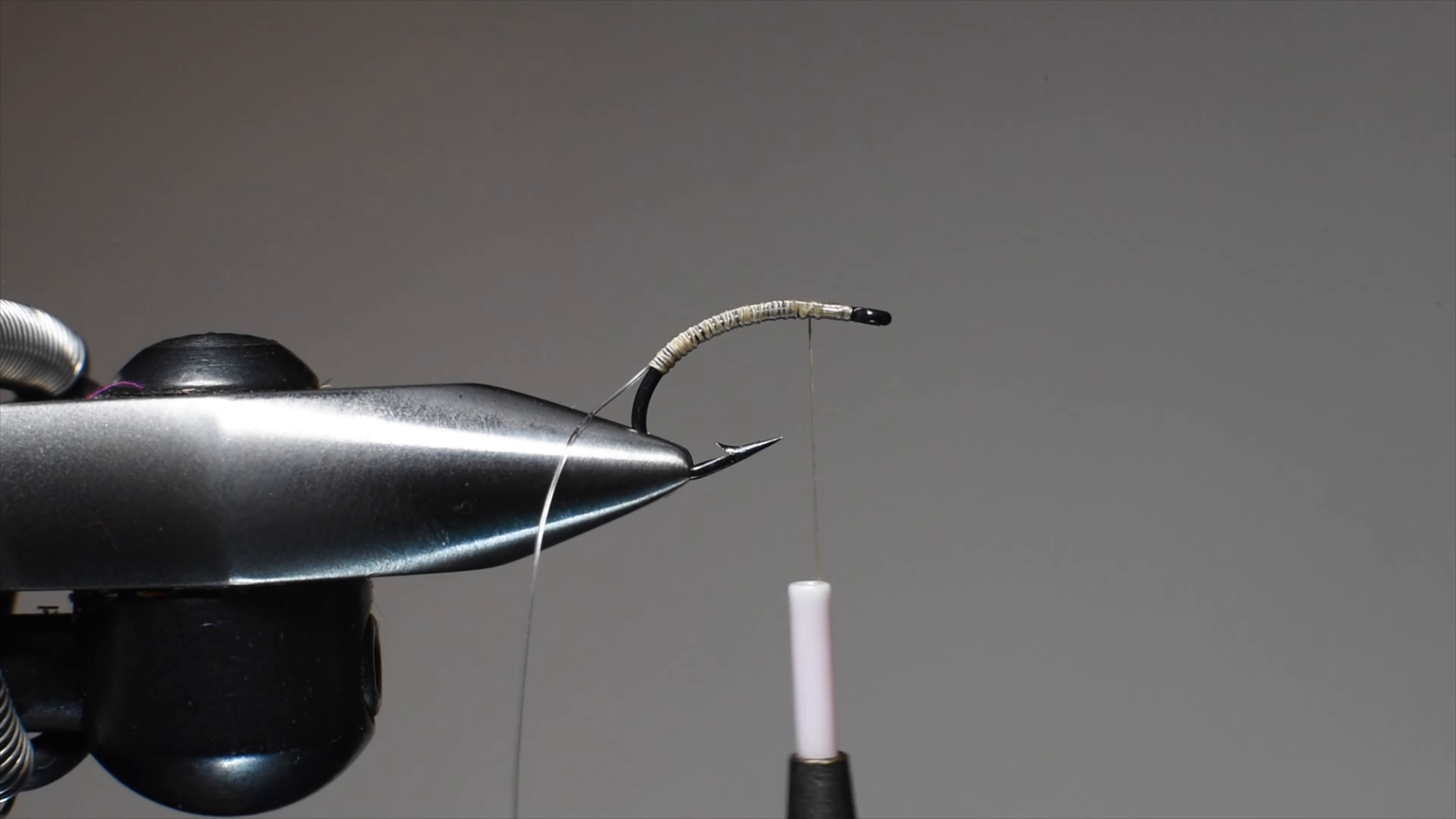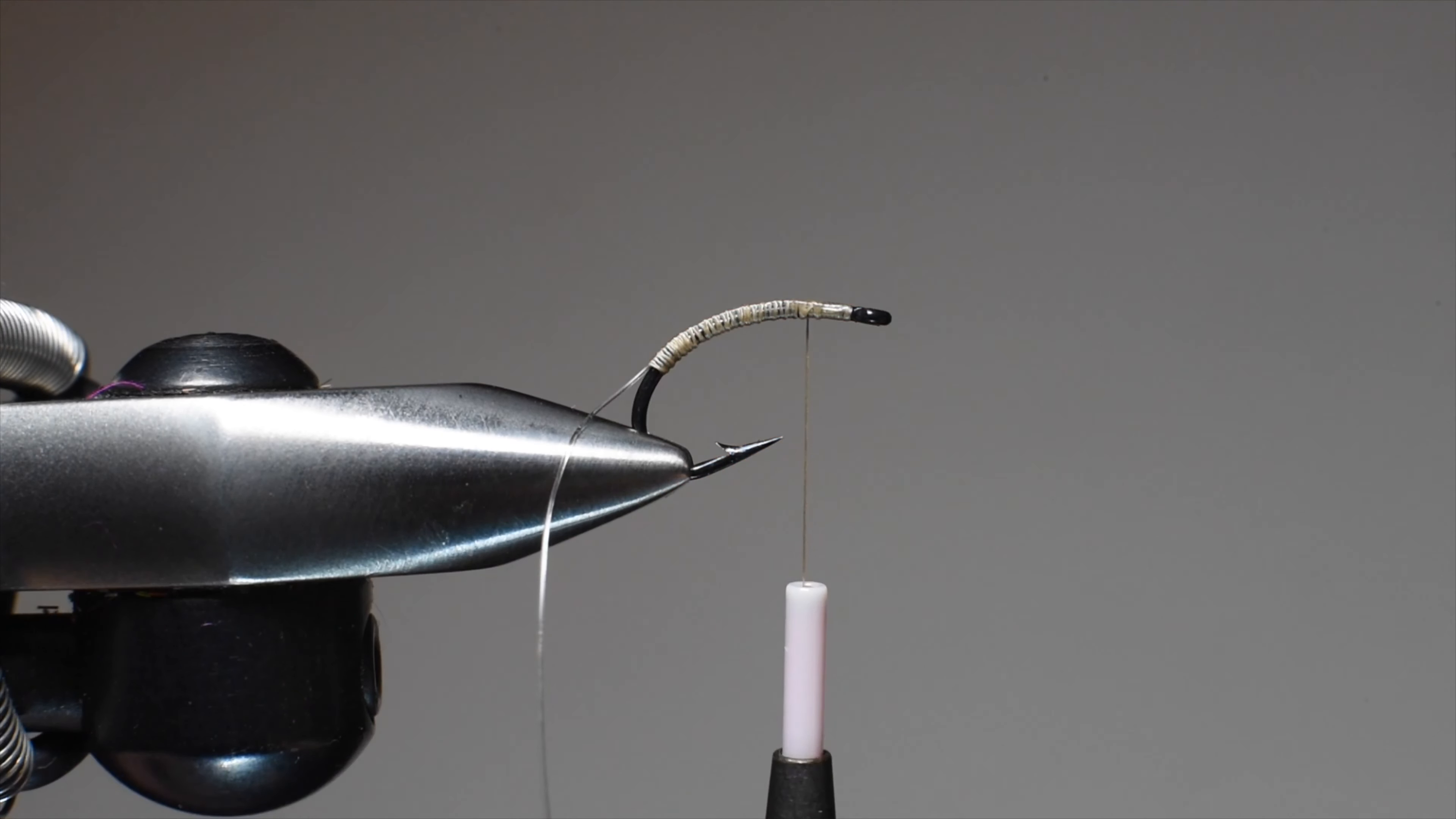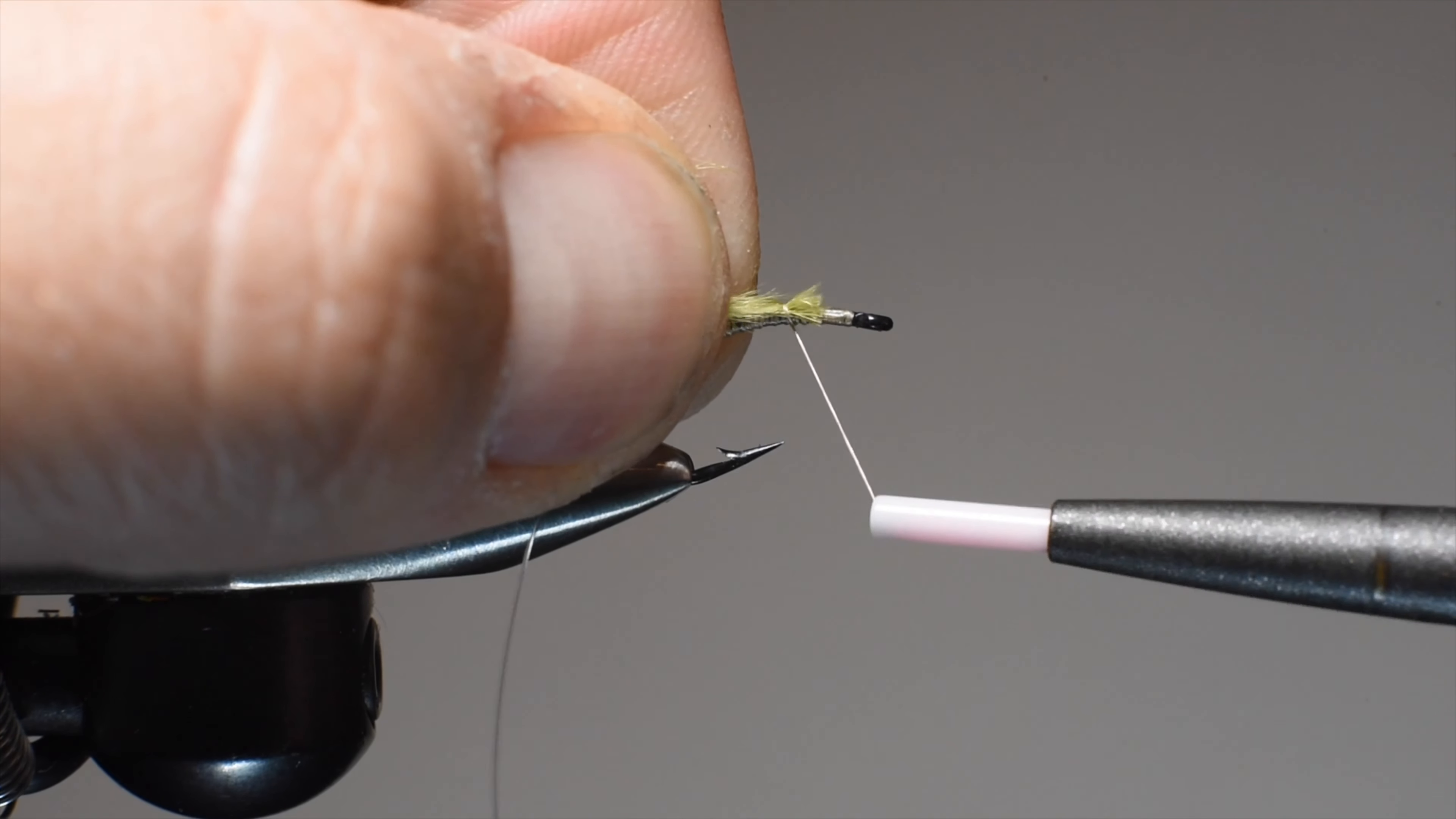We'll work our thread back up to the eye. For the legs and bugginess of this fly, we're going to be using some ostrich hurl in olive. You can see how brittle the tips are, so you want to make sure you get some fibers that are a little bit long. I usually just cut off a good inch of the tip because I don't want it to break.